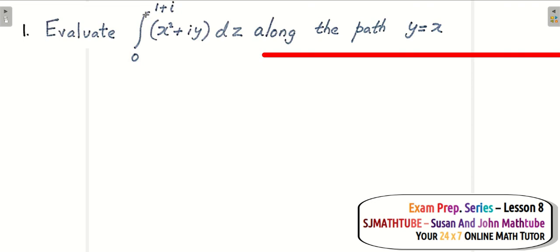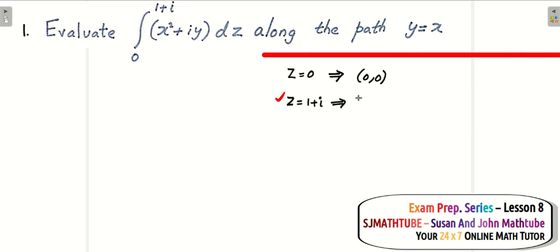Look at the lower limit: the variable of integration is z, so z=0 implies the origin, x=0 and y=0. Now the upper limit is 1+i, that means z=1+i, which corresponds to the point (1,1). So x varies from 0 to 1 and y varies from 0 to 1, and the path used is y=x.